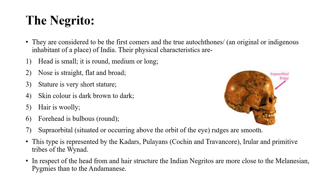First is Negrito. They are considered as the first comers or autocthones — these are the original or indigenous inhabitants of a place. So they are considered as the indigenous people of India. Physical characteristics: head is small, round, medium; nose is straight, flat, and broad; stature is very short; skin color is dark to dark brown.